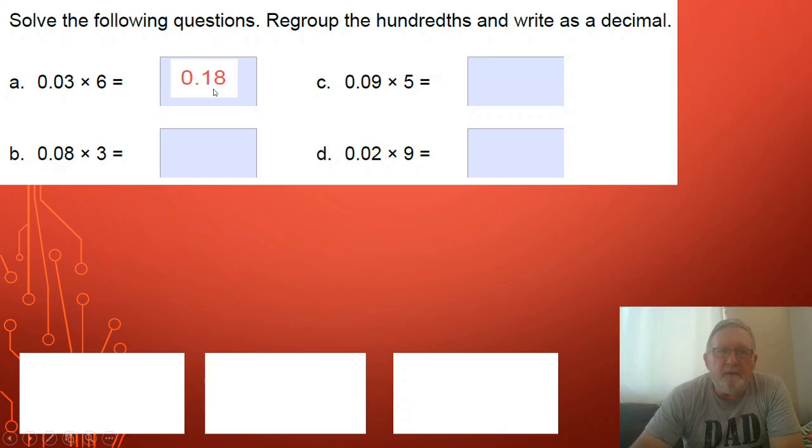If I look at the first one, three times six, three sixes are 18. You can see the 18 in the answer but it's in a different place value. It's not ones, it's not tenths, it's actually hundredths. When we have hundredths, we know that we need two numbers following the decimal point and that's what we have there.